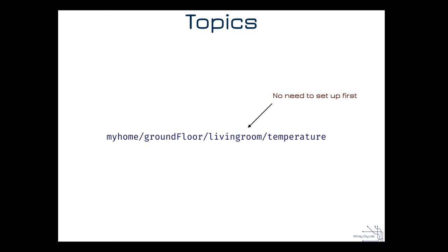Now let's look at topics. Topics are the organizational way — the channel in which information flows. A topic can be called anything you want, and they use a slash-based architecture, very much like a directory system on your computer. You can organize your topics; for example, it might say 'my home' at the top level.